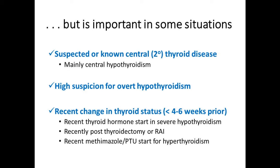If you have a high suspicion for overt hypothyroidism and you think your TSH is going to be 15 or 20, you may want to check the T4 at the same time — if it's low, you have overt, not subclinical disease, which is a stronger indicator for treatment. Also, if you have a recent change in thyroid status, remember the TSH has a half-life of about a week and can take six to eight weeks to fully equilibrate. So if you start a frail elderly patient on 25 micrograms, you can check T4 three to four weeks later — if it's in the normal or high-normal range, you know you're probably going to get to goal.